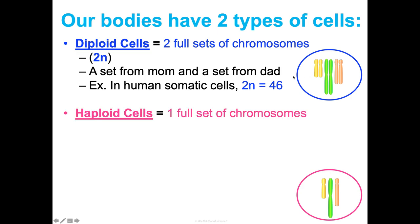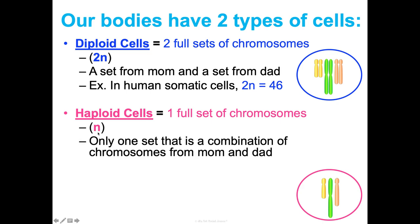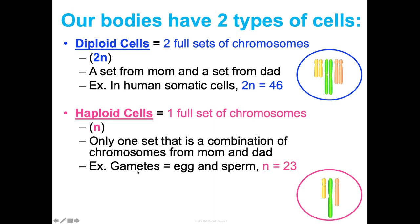This is different from a haploid cell. Haploid cells have half — so half of 2 is 1 — they just have one full set of chromosomes, just N. That's a combination of chromosomes from mom and dad. These are your gametes, either egg or sperm — you don't have both. In humans, N equals 23. In this haploid cell, we can just see 3 chromosomes — notice it's half. There's only one from each of these pairs.